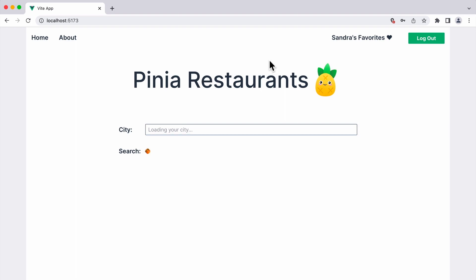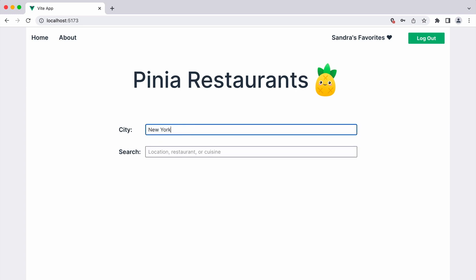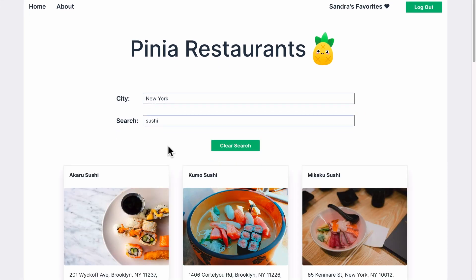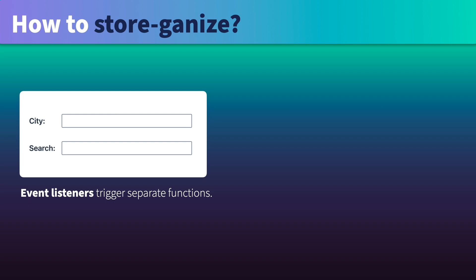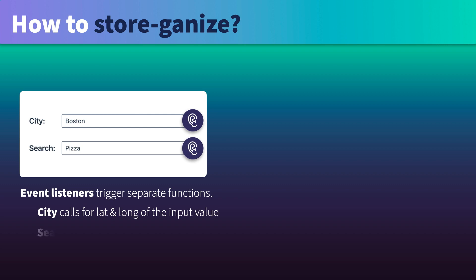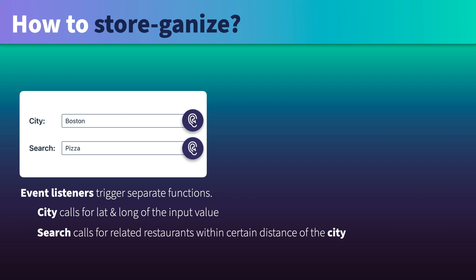Looking at the functionality of our restaurants app, there's a search bar with two inputs. The first input takes in a city location. The second input takes in a search term to find related restaurants. Both inputs have event listeners that trigger a function when the user types in text. Each function makes a call to the Google Maps API. City calls for the latitude and longitude of the location typed in by the user. Search takes in a term and calls for relevant restaurants within a certain proximity of the city.